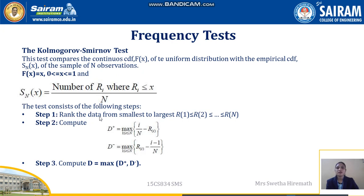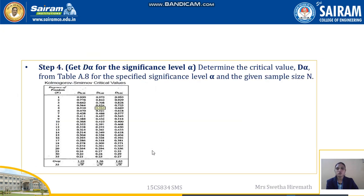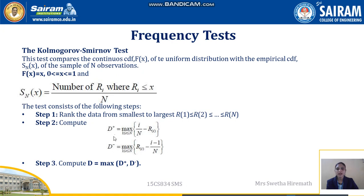The Kolmogorov-Smirnov test is performed in the following steps. Step 1: rank the data from smallest to largest — that is, arrange the sample in ascending order. Step 2: compute D+ and D− values, where D+ = max(i/N − R_i) and D− = max(R_i − (i−1)/N). Step 3: compute D as the maximum of D+ and D−, whichever is larger.